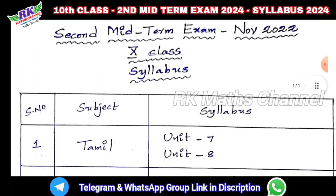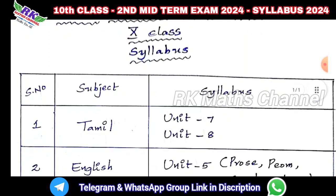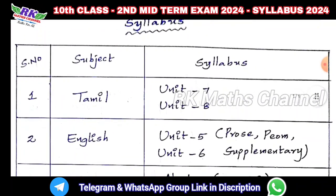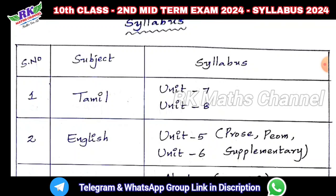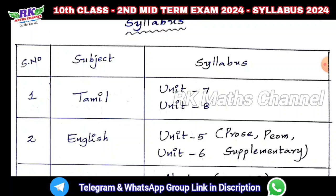So for November 2024 second midterm exam syllabus, first Tamil: up to unit 5 and unit 6 — that is unit 5, unit 6 — covering prose, poem, and supplementary.